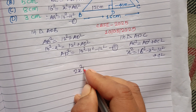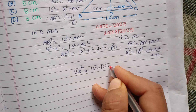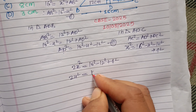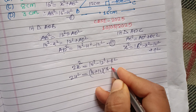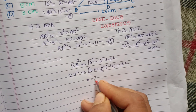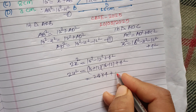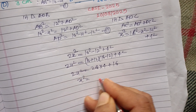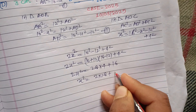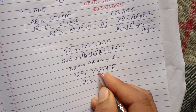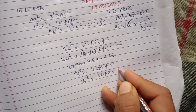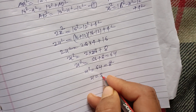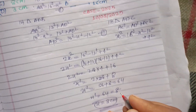We use the identity a² - b² = (a+b)(a-b). So we get (16+12)(16-12) + 4² = 2X², which gives 28 × 4 + 16 = 2X². That is 112 + 16 = 128, so 2X² = 128. Dividing by 2, X² = 64 = 8². Therefore X = 8 cm.